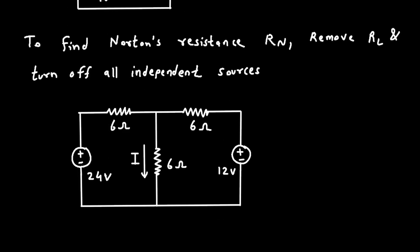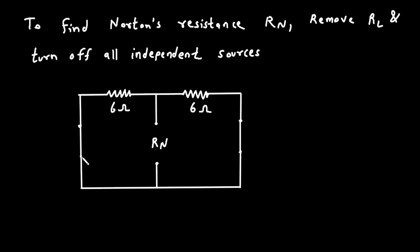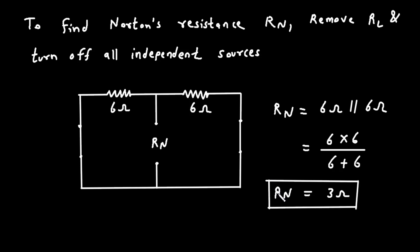Here is the circuit. We will remove this load resistor RL, and this will be the Rn Norton's resistance. We will turn off all the independent sources. This is an independent voltage source, so when we turn it off it will be a short circuit. Similarly the other one becomes a short circuit. Now we can find Rn: it is 6 Ohm parallel with 6 Ohm, which is 6 times 6 divided by 6 plus 6. Therefore Rn is equal to 3 Ohm.